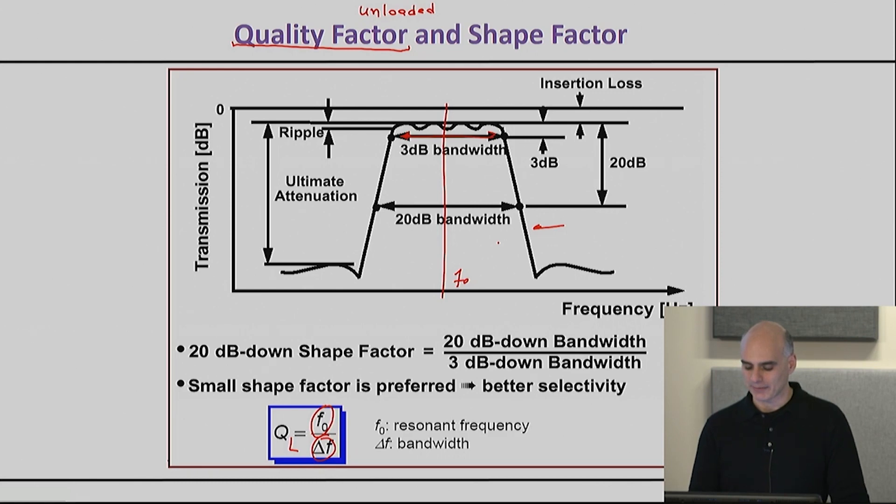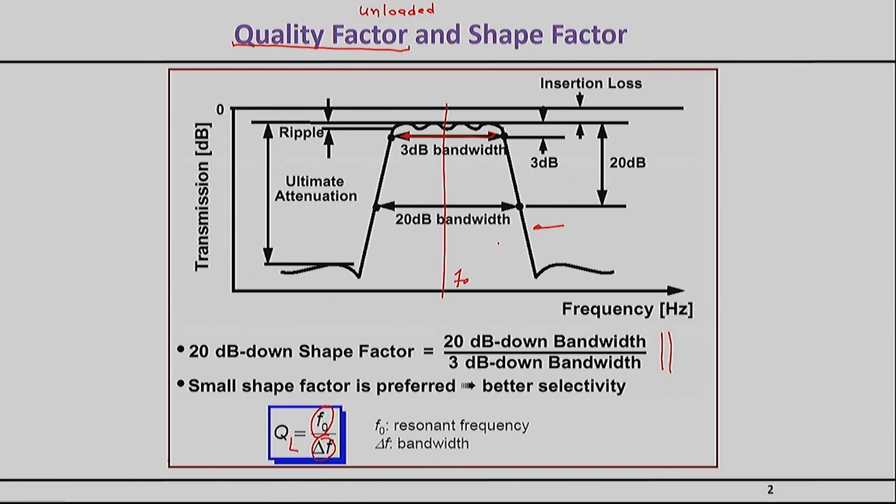There is also the shape factor of the filter, which sometimes has been confused with quality factor. The shape factor of the filter is nothing else except how sharply your filter rejects once you move away from its passband. The shape factor is related to the order of the filter n, and even though it is loosely connected to the quality factor, that's not what we're talking about here.